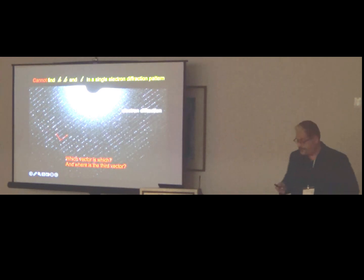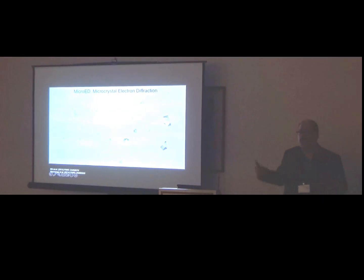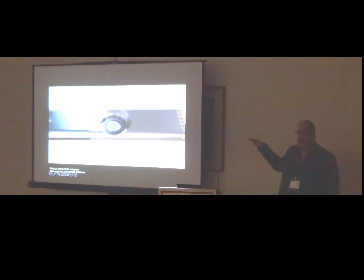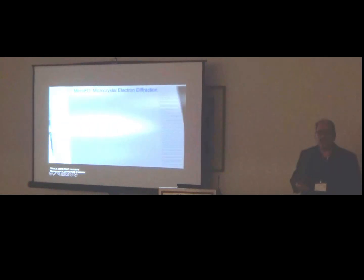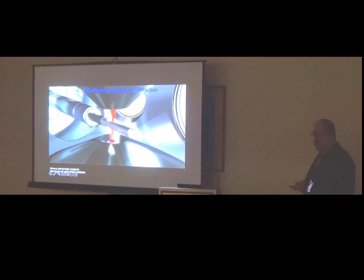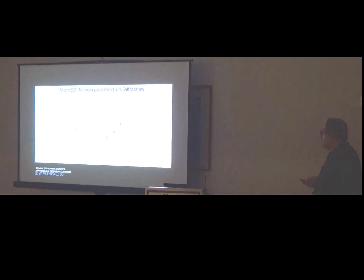So how does microED work now? You start with crystals that are a billionth the size of what you need for X-ray, because electrons interact with matter really well. You freeze them — that stops movement and protects the crystals from radiation damage. You transfer under cryogenic conditions to a cryo-TEM. When you find a crystal you're interested in, you start the beam in diffraction mode and the stage is continuously rotating. You record the data in a fast camera as a movie, and because the stage is rotating during the exposure, each frame will contain a wedge in reciprocal space. At the end, you have many frames all from a single crystal, so you can index and determine symmetry without any prior knowledge of unit cell dimensions or symmetry.